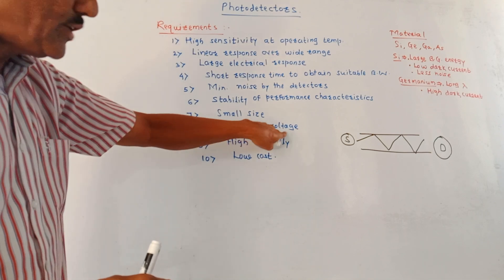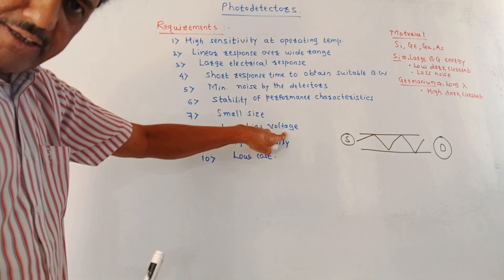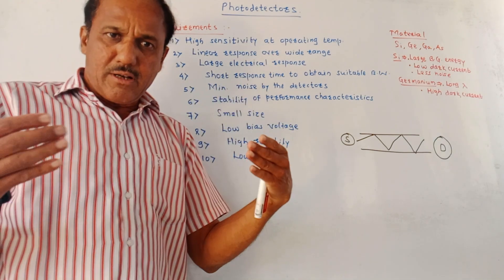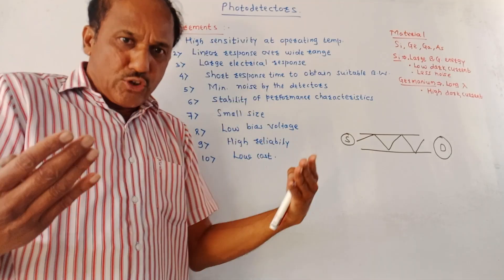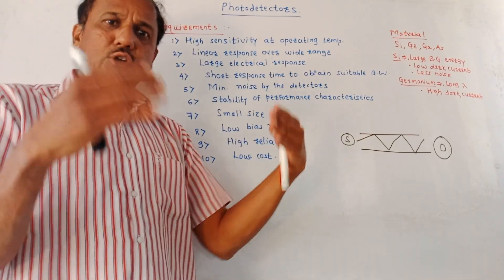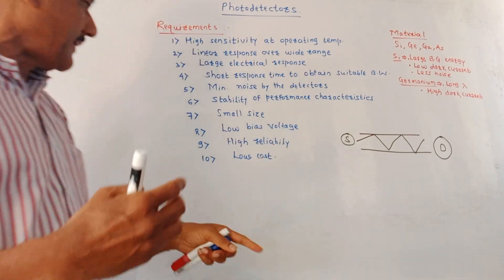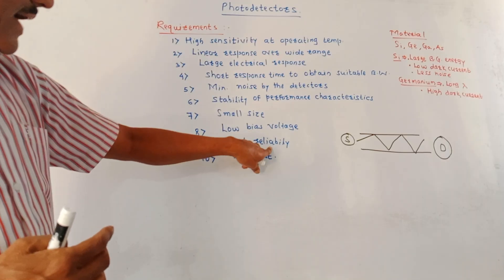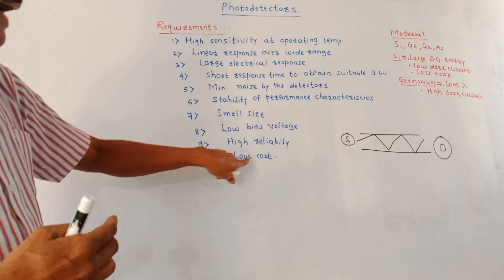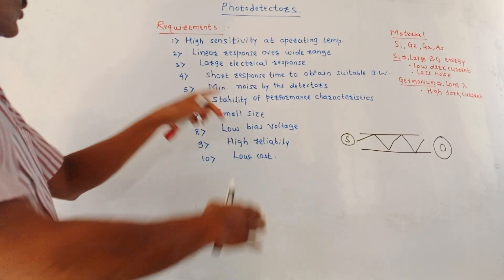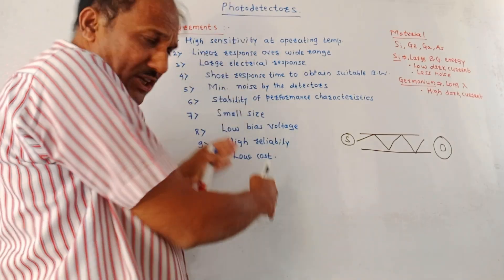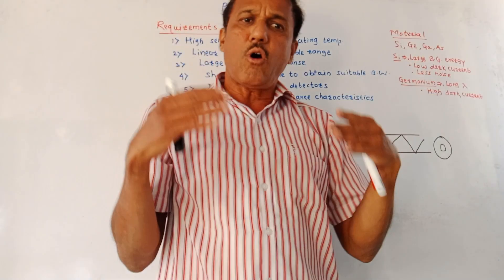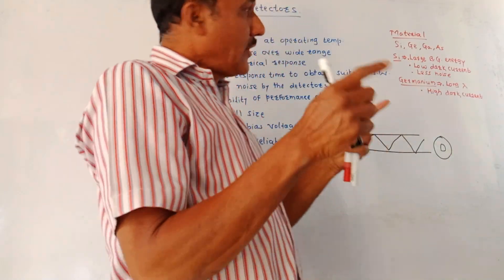Then, low bias voltage requirement — there should be minimum bias voltage required for the selected detector. And the last two points: it should have high reliability and low cost. So these are the major requirements of optical or photodetectors.